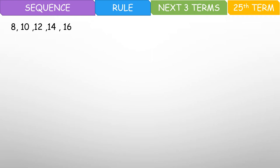Next, we have 8, 10, 12, 14, 16. Now ngayon, nakita mo na dagdag ulit ng 2, diba? 8 plus 2 is 10, plus 2 is 12, plus 2 is 14, plus 2 is 16. So the number repeatedly added is 2. So tama nga — 2n ang part ng rule. But ang first number natin is 8. So kung 2n lang ang ilagay mo, ang first number mo would be 2. Kasi 2 times 1 is 2. Eh anong gagawin natin para magiging 8 yan? Eh di ba dadagdagan natin ng 6? So ang rule natin would be 2n plus 6.